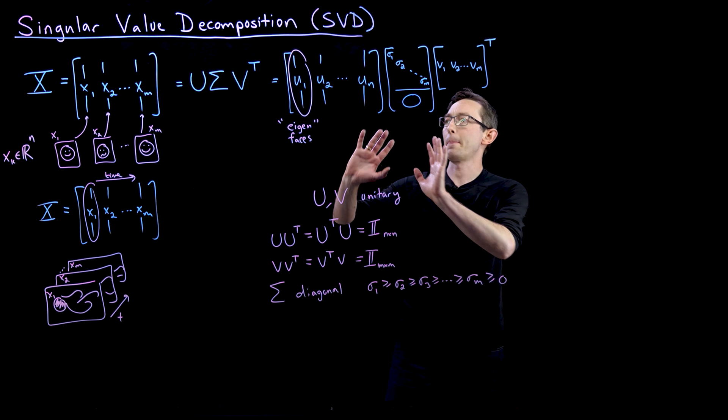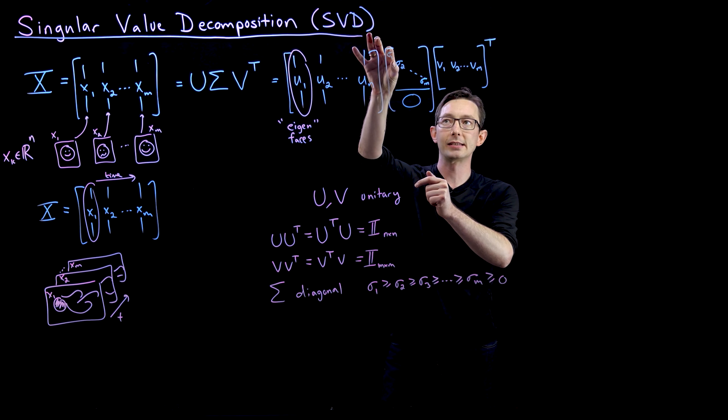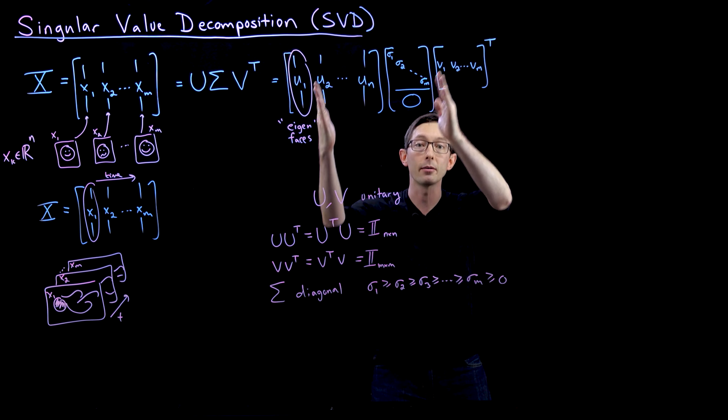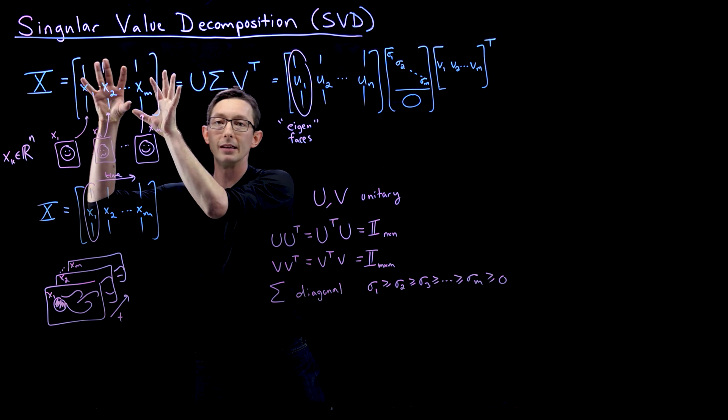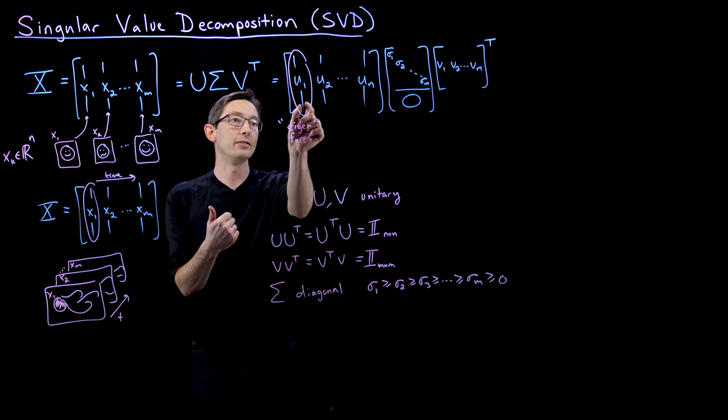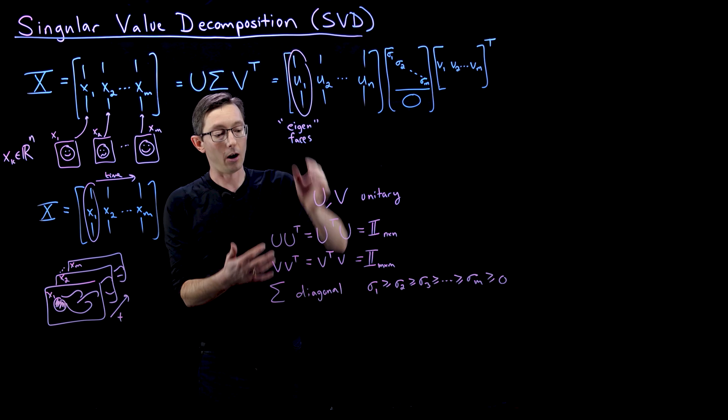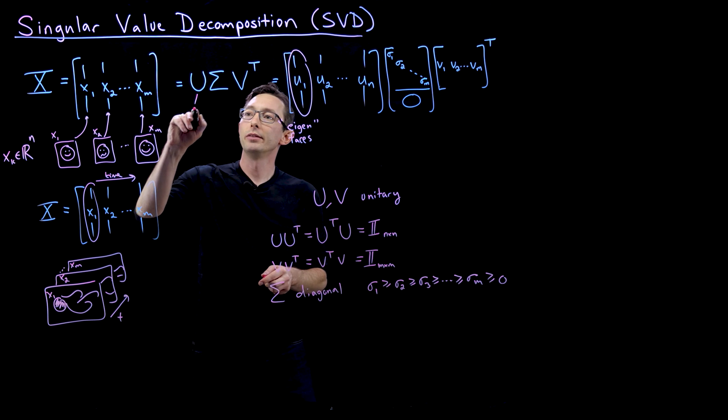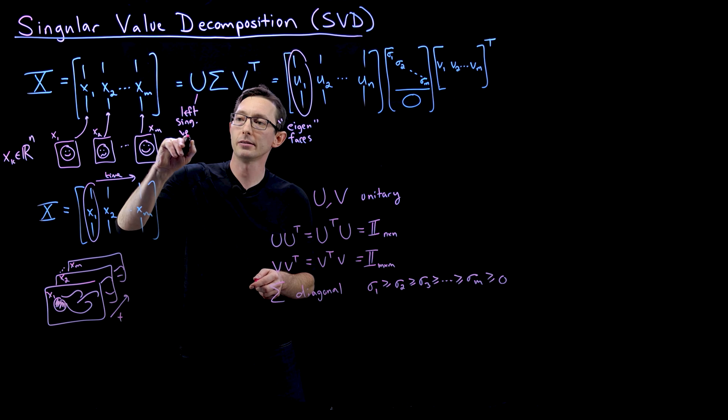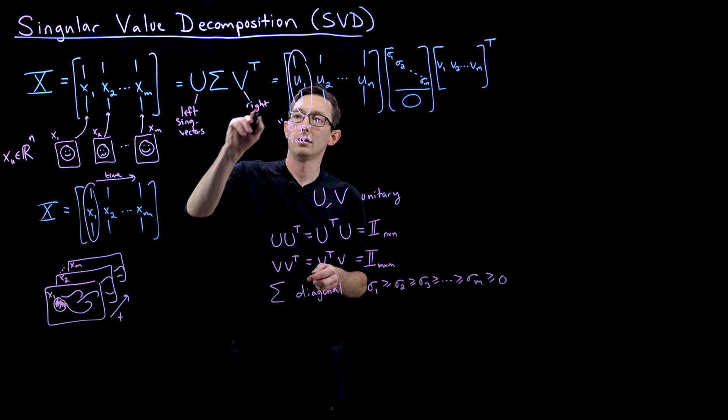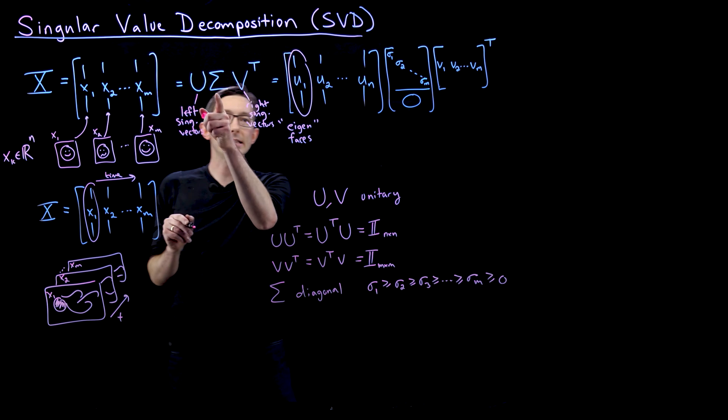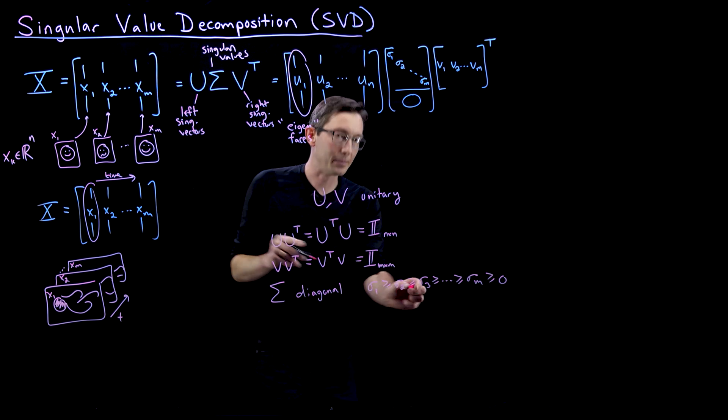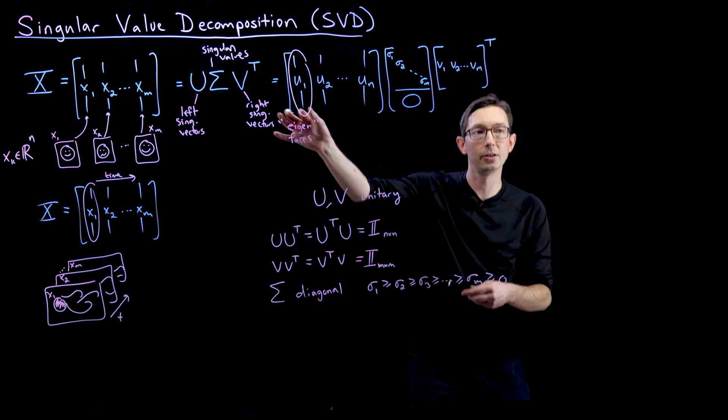So what this means is that the first column of U corresponding to sigma one and the first column of V corresponding to sigma one are somehow more important than the second columns and those are more important than the third columns and so on and so forth in describing the information in the data matrix X. And the relative importance of these columns of U and columns of V are given by the corresponding singular value. So that's what we call these. We call the U matrix the left singular vectors.